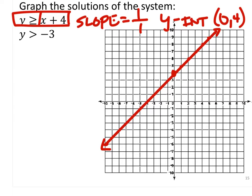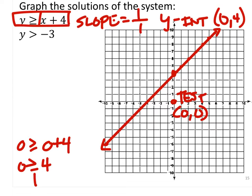So let's use our test point 0, 0. Test 0, 0. And so then we have 0 is greater than or equal to 0 plus 4, and 0 is greater than or equal to 4. That is false.